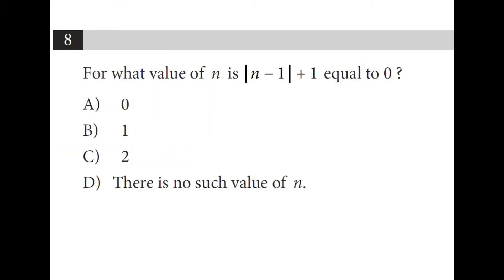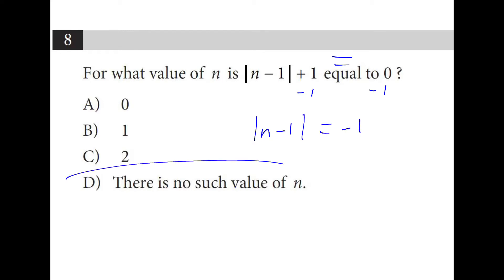Again, we have this scenario where something plus 1 is equal to 0. If we subtract 1 from both sides, we end up with the absolute value of n minus 1 equals negative 1. There's no such value, because the definition of absolute value is distance from 0 — it can't be negative.